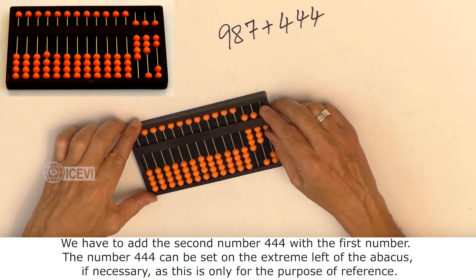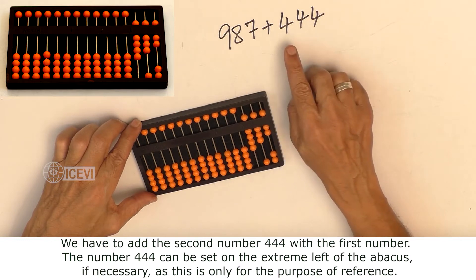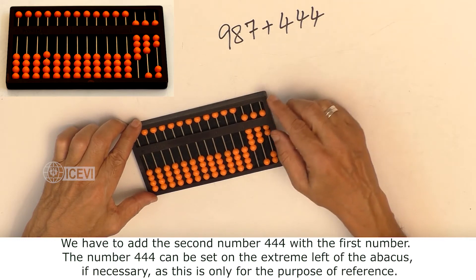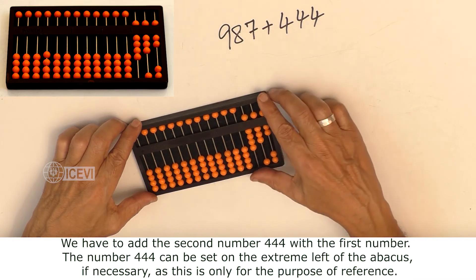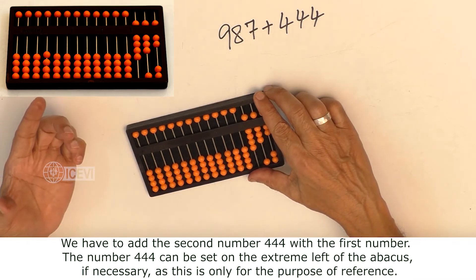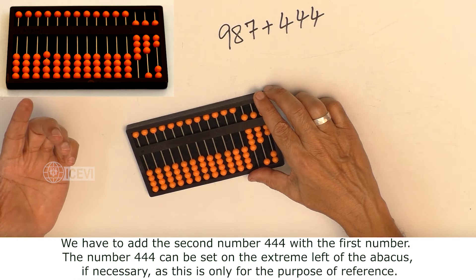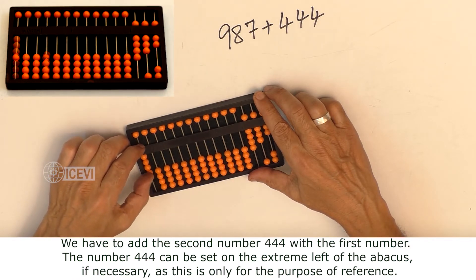We have to add the second number 444 with the first number. The number 444 can be set on the extreme left of the abacus if necessary, as this is only for reference.